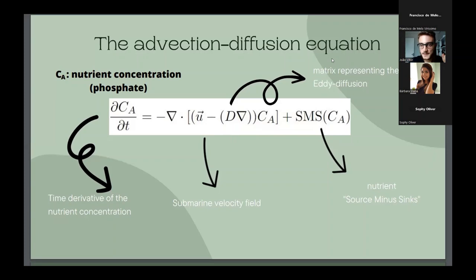depends on the diffusion, represented by this matrix D here, and the source minus sinks of the nutrient Ca, that includes the biogeochemistry and the nutrient remineralization here. So, let's see better this term, source minus sinks.